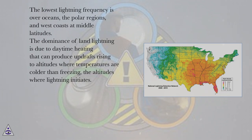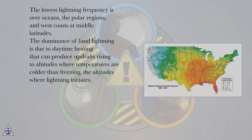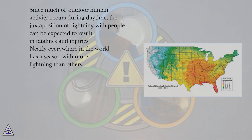The dominance of land lightning is due to daytime heating that can produce updrafts rising to altitudes where temperatures are colder than freezing — the altitudes where lightning initiates. Since much of outdoor human activity occurs during daytime, the juxtaposition of lightning with people can be expected to result in fatalities and injuries.